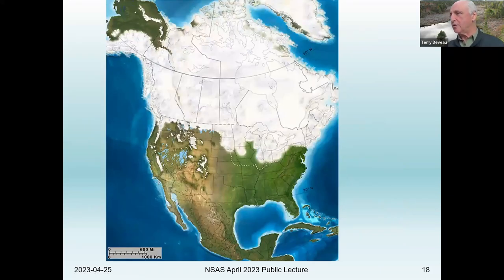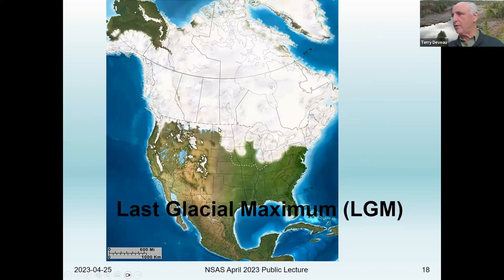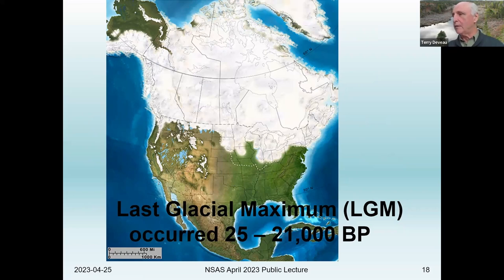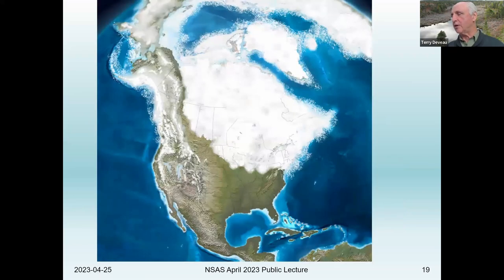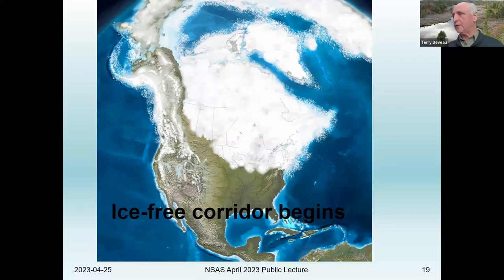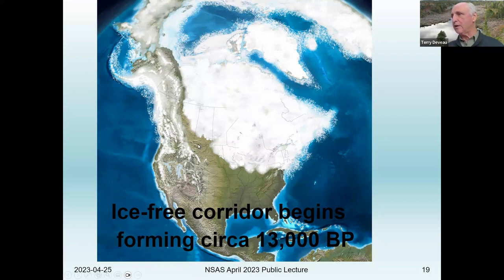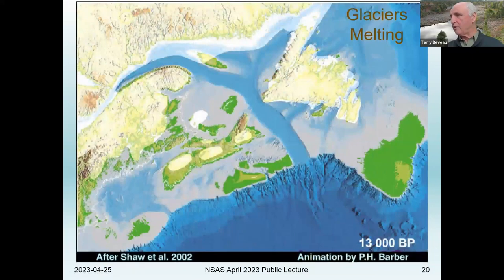What is this glacier? Most of North America — the northern half anyway — was covered by a very large glacier up until maybe 15,000 years ago. It reached its peak at around 25,000 to 21,000 years ago, and then started to melt, though it took thousands of years. Around 13,000 years ago, an ice-free corridor started to form through the Yukon and Alberta.